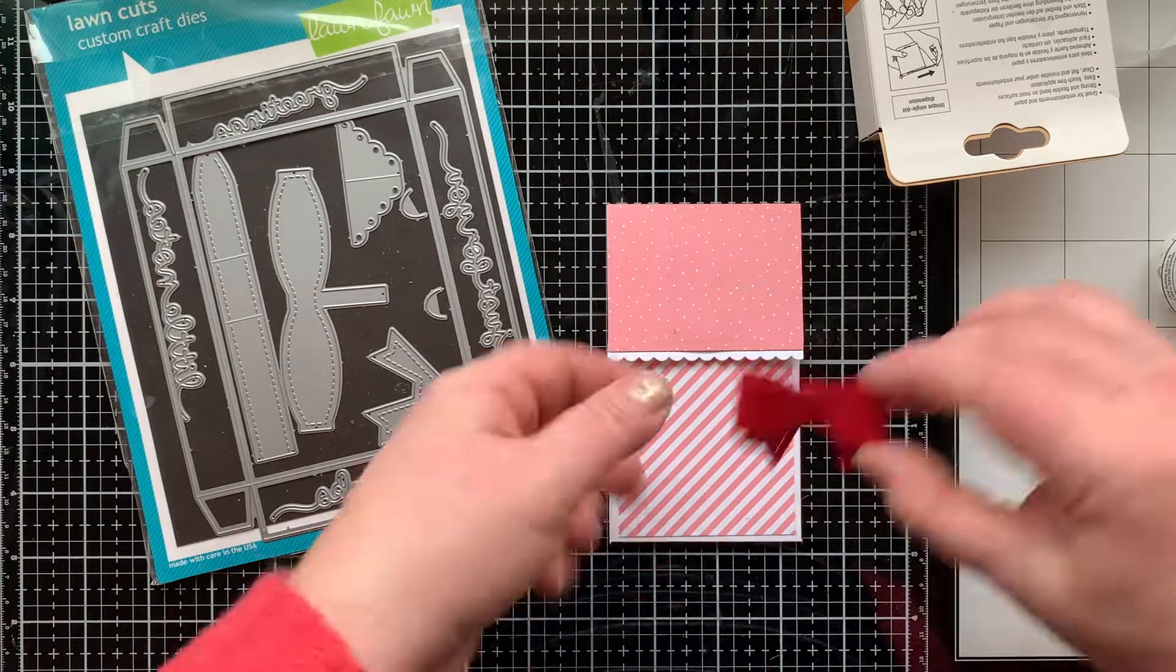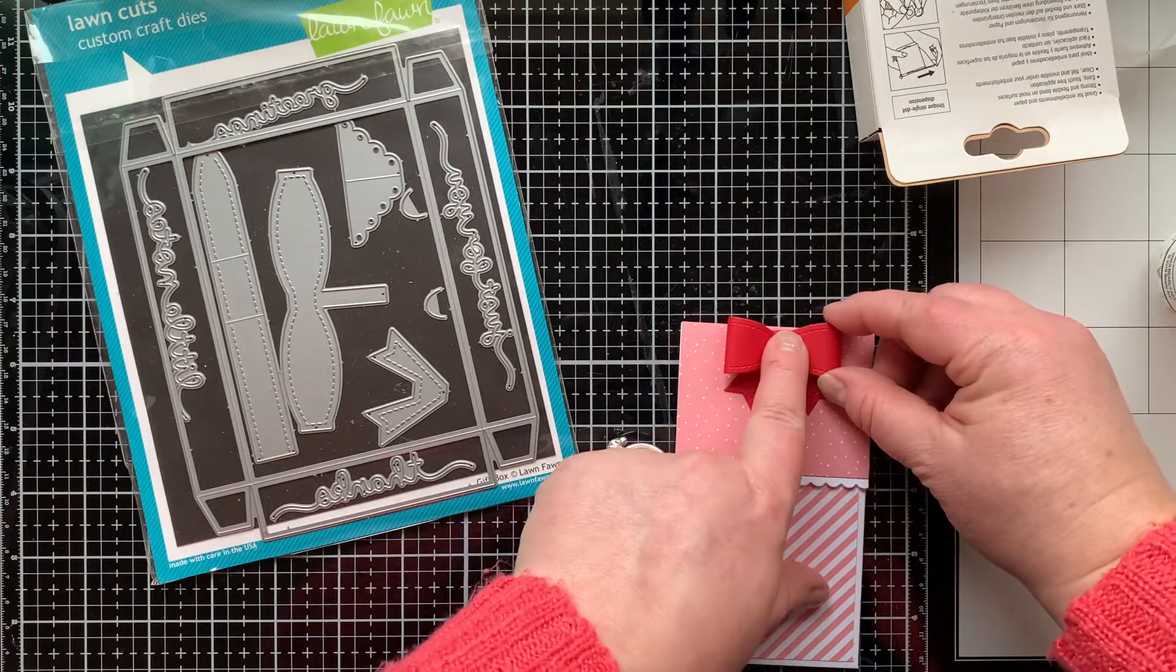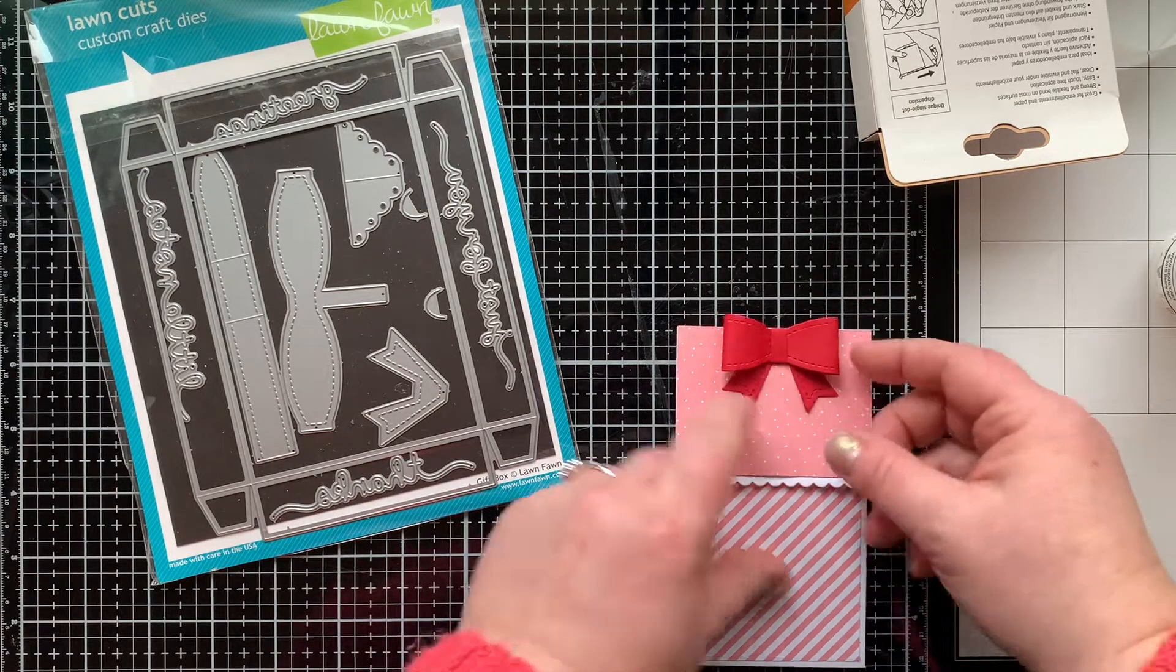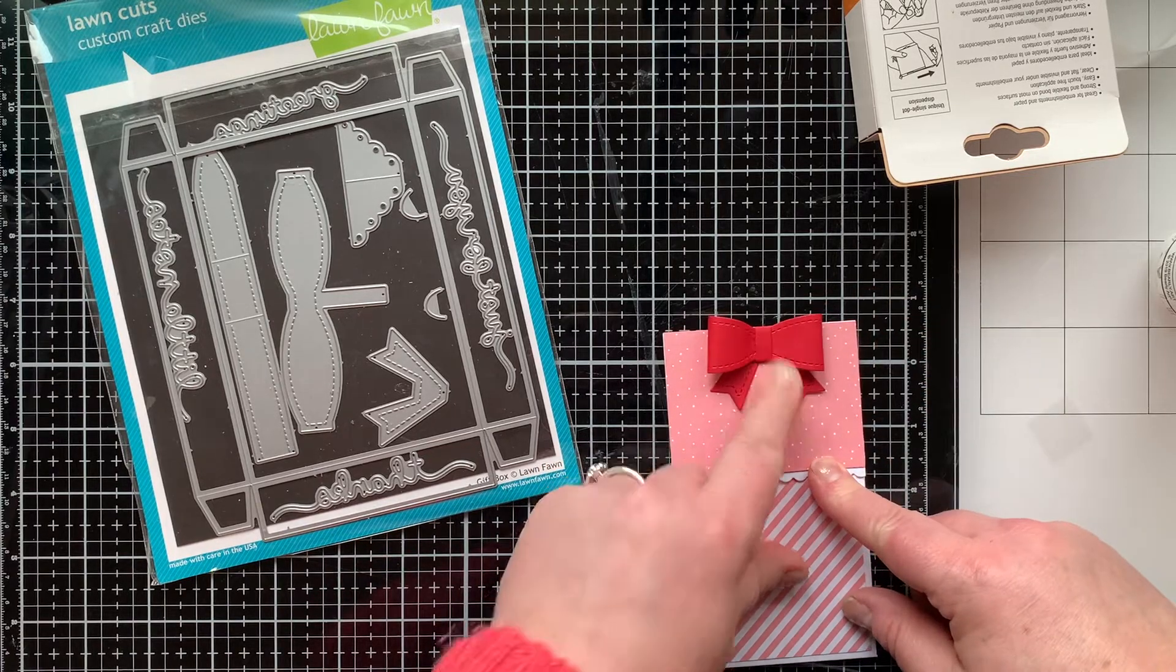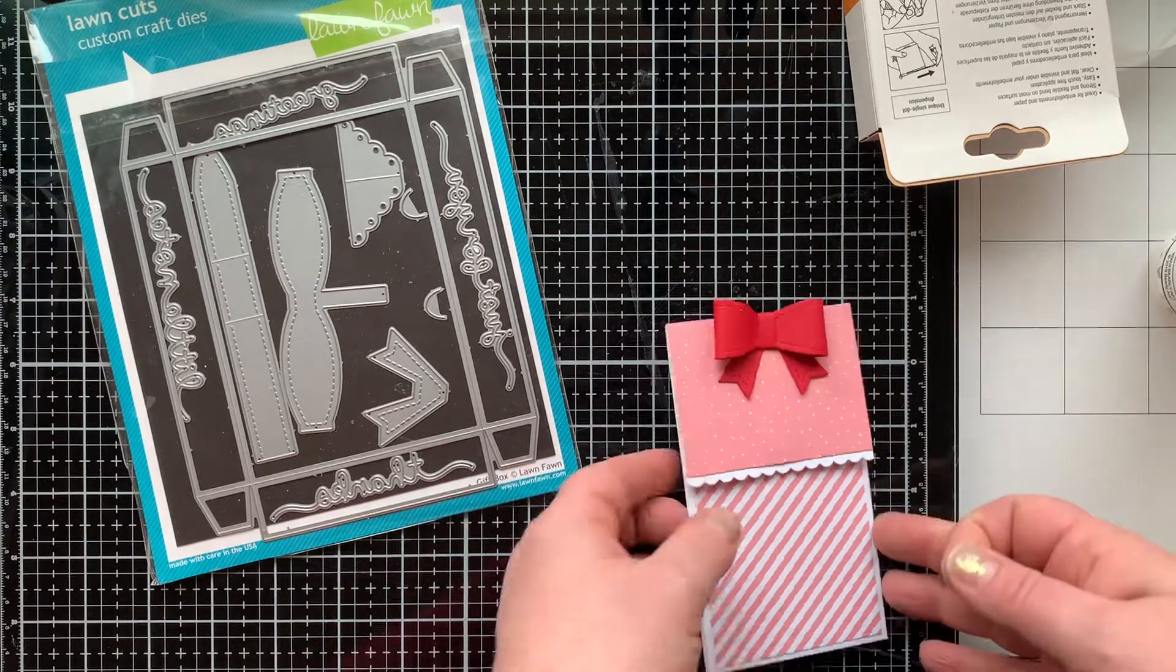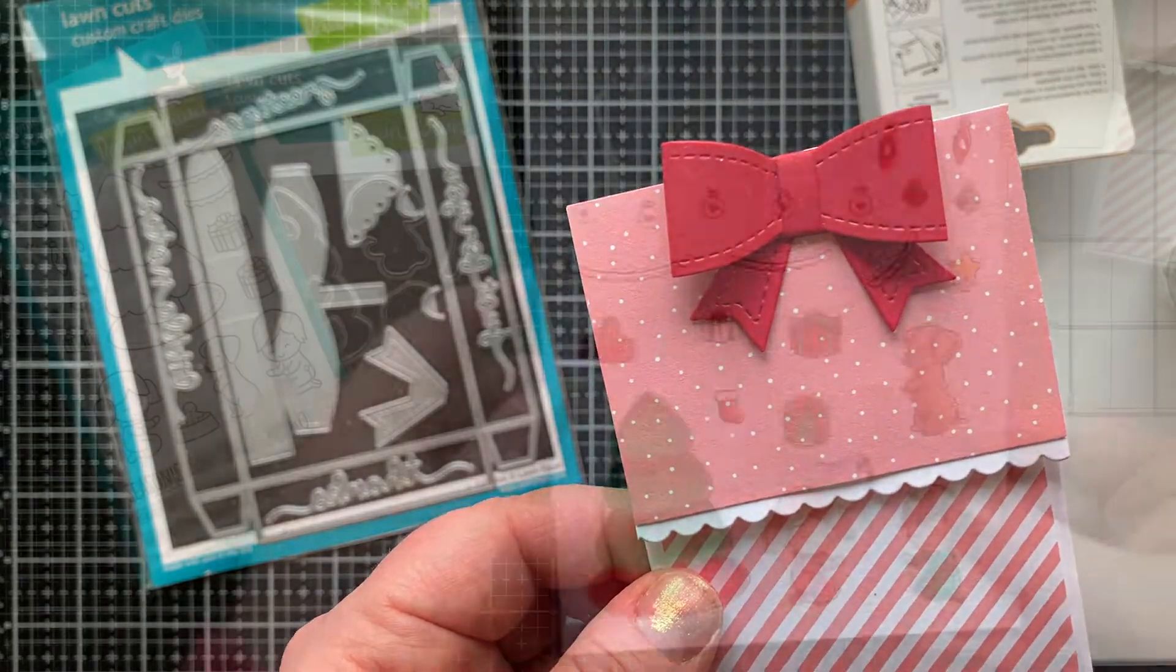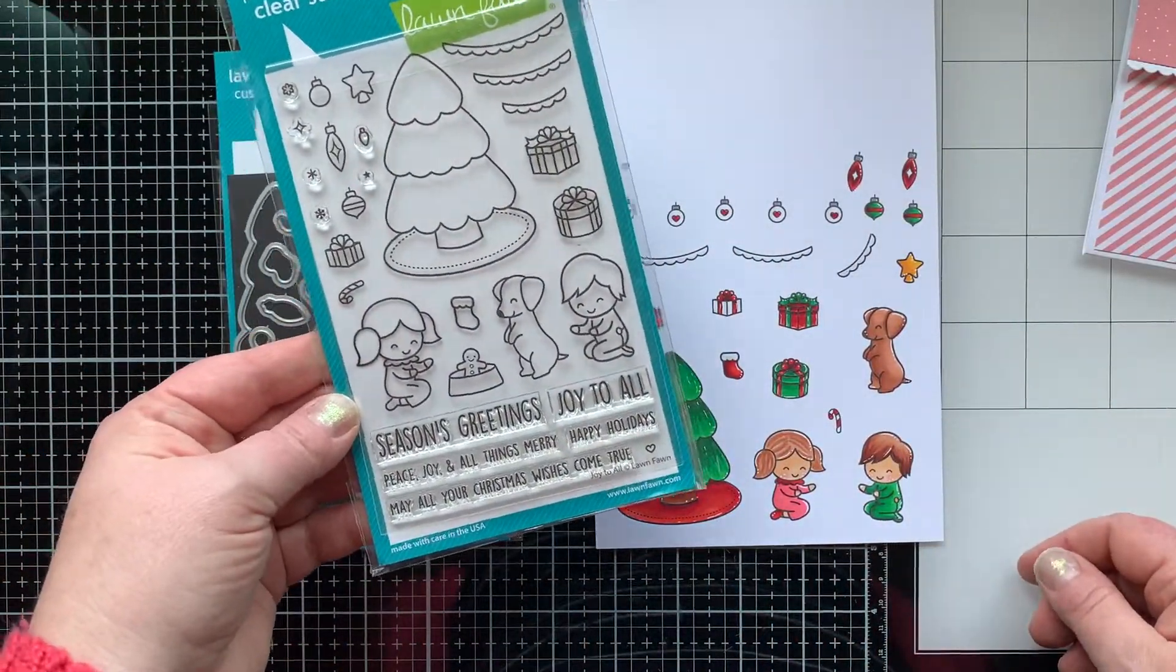If you don't have this die set or a bow die set, you could easily just tie a piece of ribbon and stick this right to the gift card holder and that would be just as cute. Now I'm going to add a little scene to mine, but like I said you could keep this really simple. But I love this new stamp set from Lawn Fawn, Joy to All, and I thought it would be really cute to make a little scene right on the front of this, like I would do with a card, just to make it a little bit more special.